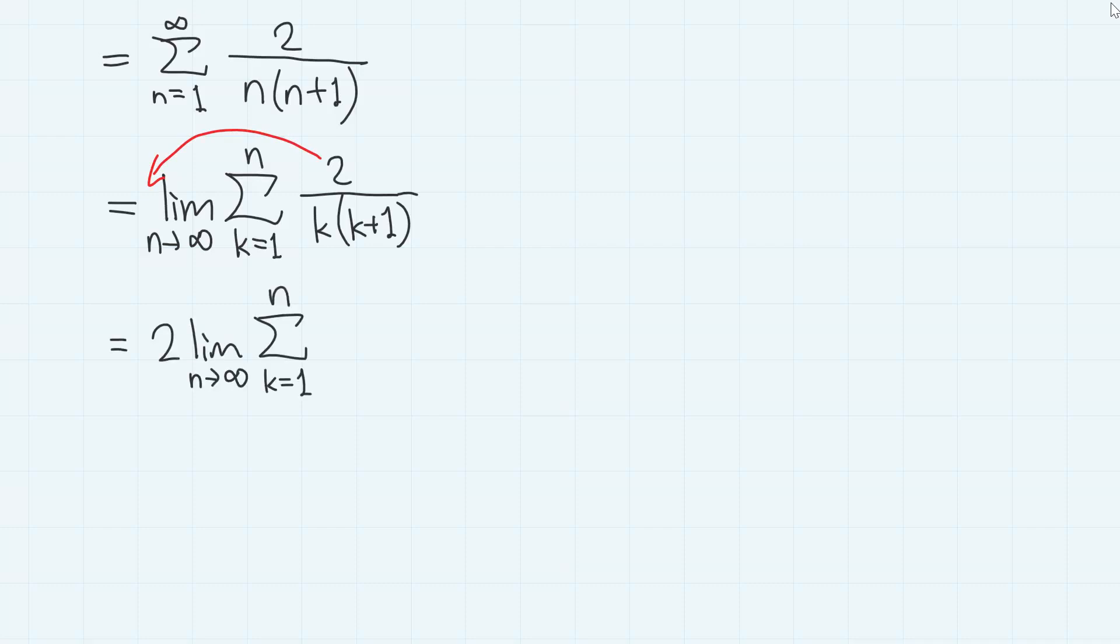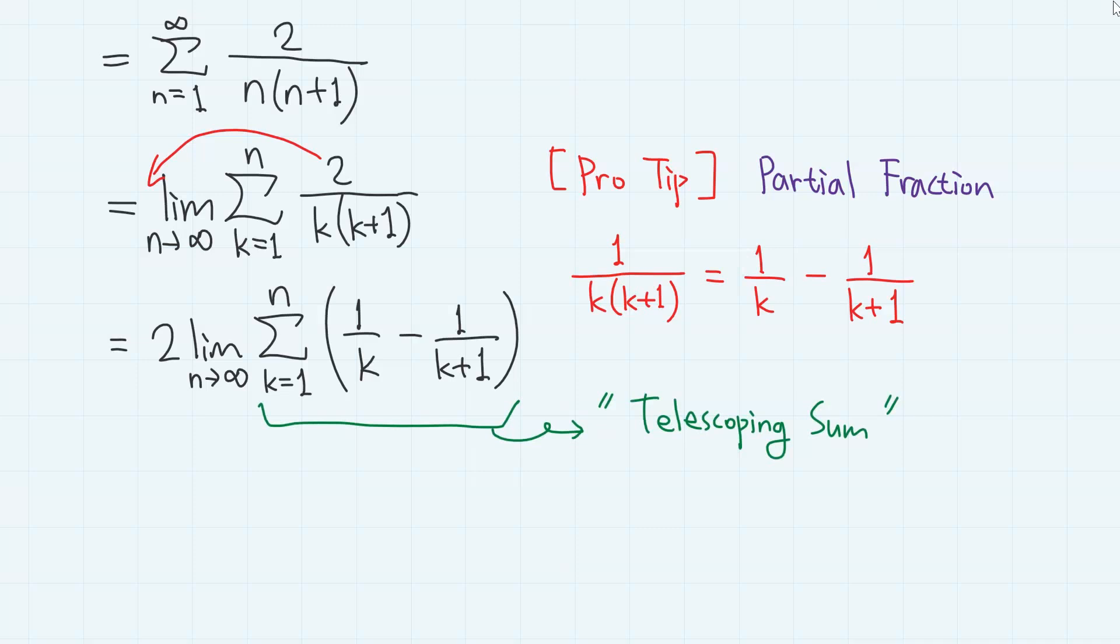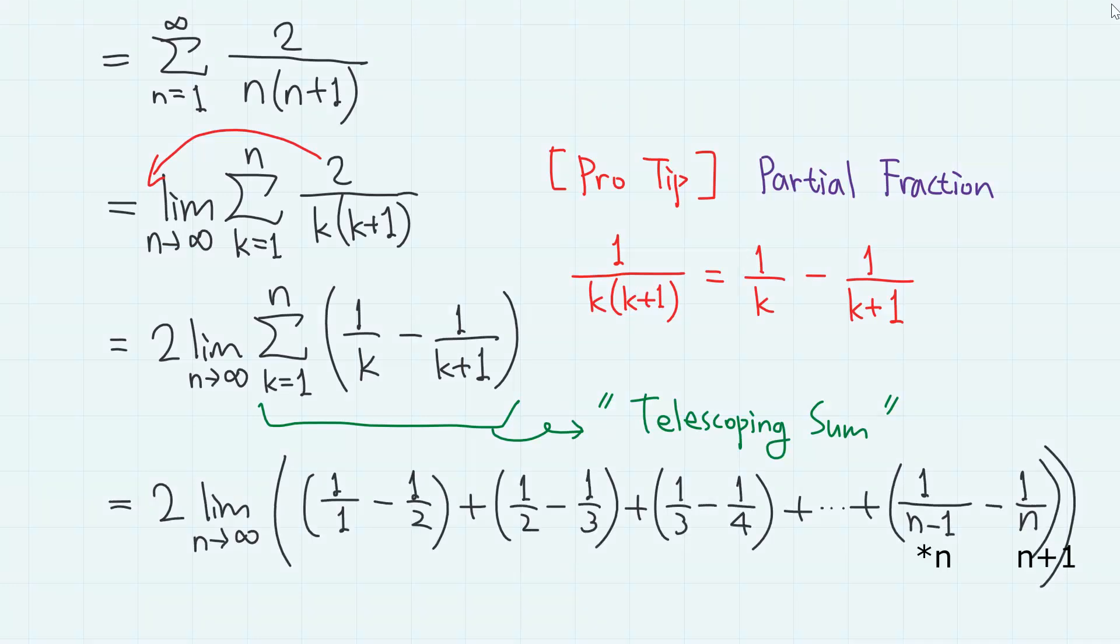And we use the very famous partial fraction: 1 over k, k plus 1 equals 1 over k minus 1 over k plus 1, which gives 1 over k minus 1 over k plus 1 here. This is the very famous type of sum, often called the telescoping sum.